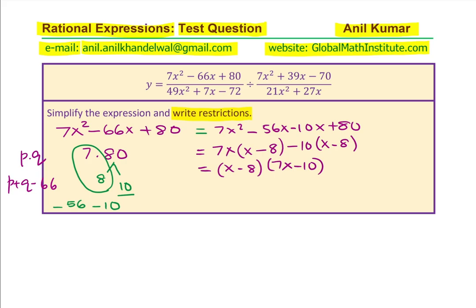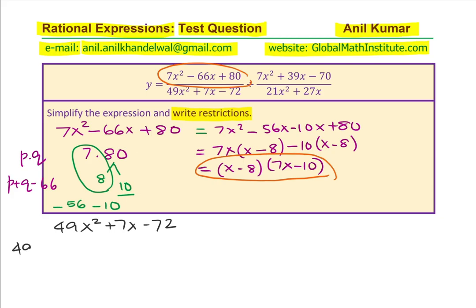So let me highlight this numerator — this portion has been factored, and the factor is right there. Now let's take the denominator, which is 49x squared plus 7x minus 72. To factor, we are looking for two numbers whose product is negative 49 times 72, and whose sum is 7. Let's look at more factors: 7 times 7 times 7 times 7 is 49, and we have 9 times 8 is 72.